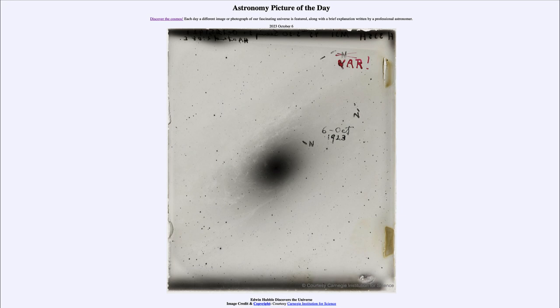And there were a few markings on it, but the biggest thing is the VAR exclamation point in the upper right hand side. And that was the identification of variable stars within Andromeda. Now why was that such a big deal?